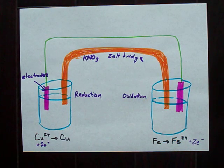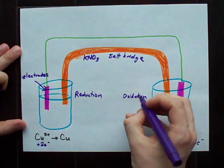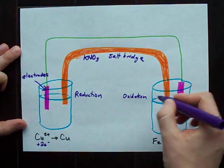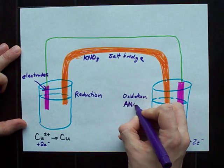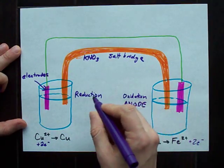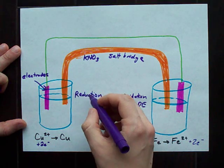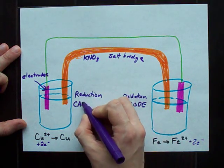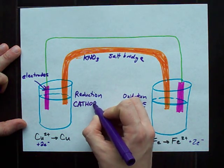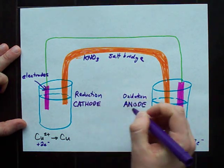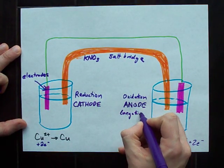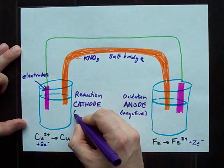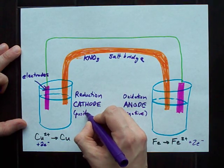Based on which is happening in which beaker — reduction and oxidation — we have special names for each electrode. The beaker and electrode where oxidation is happening is called the anode, and the electrode where reduction is happening is called the cathode.